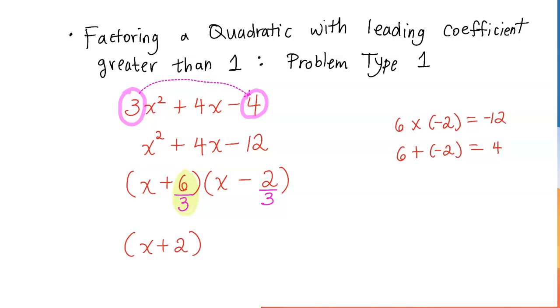But I want you to look at this one. 2 cannot be divided by 3. If that happens, what you will do is bring that bottom up in front of the x. That's why maybe some countries, some counties when I taught, they call it the bottoms up method. So I'm gonna have 3x - 2.